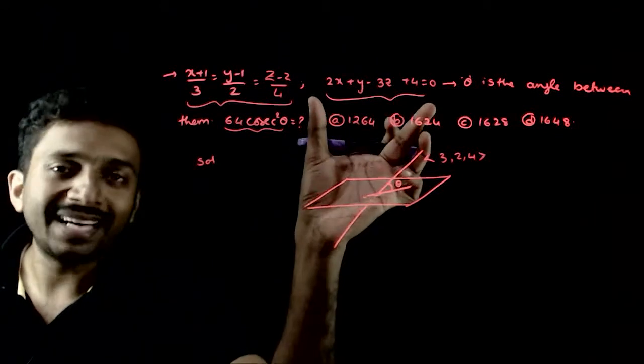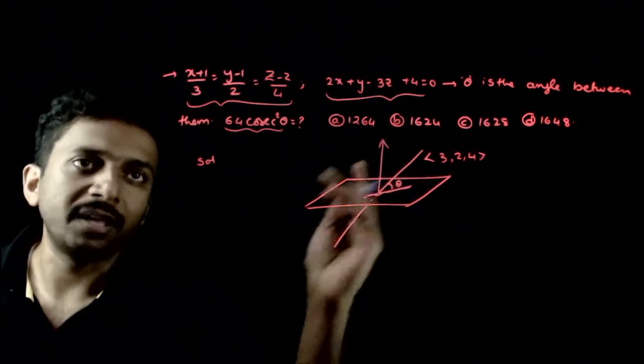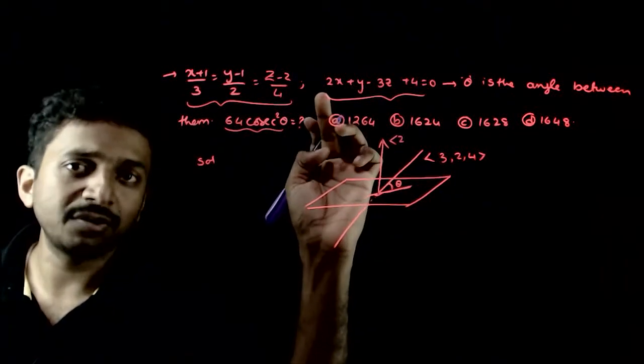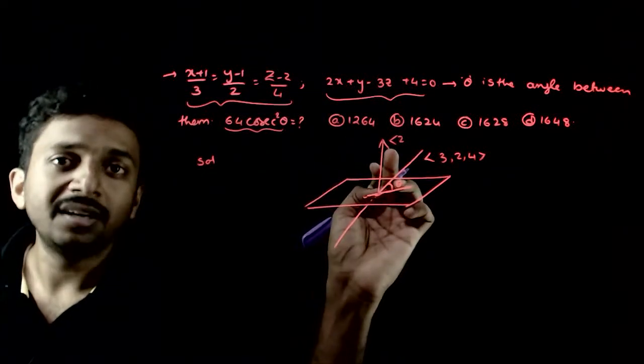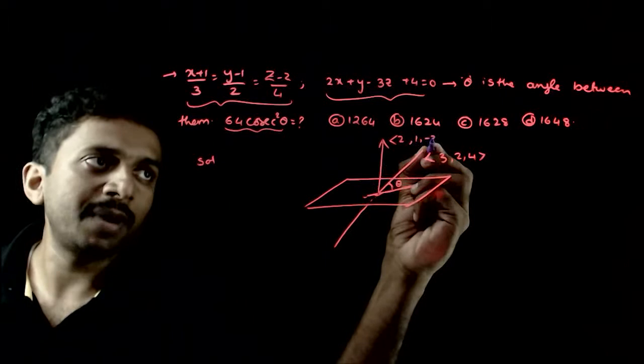And, the direction ratios of the normal to the plane, plane ka jo normal hai, wo dono ke iska direction ratios hai ga 2. The direction ratios are nothing but the coefficients of x, y and z. So, 2, 1 and minus 3.